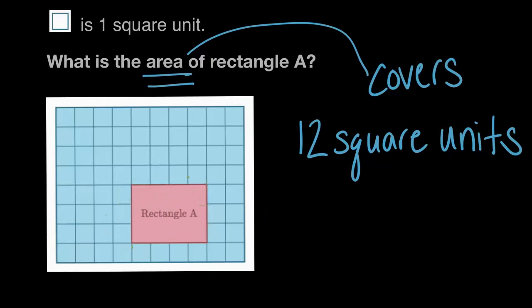Or, we could go even farther than that, so we could have said, we could have done three times four. Or, we could look at this and say, okay, here's one column. This column has three square units. It has a length of three. One, two, three.